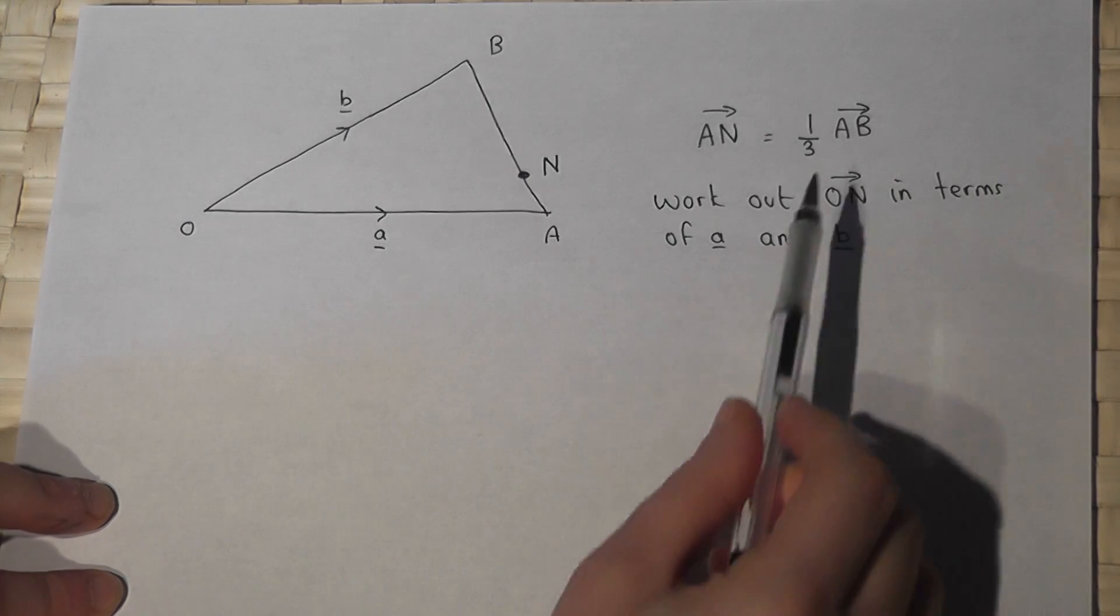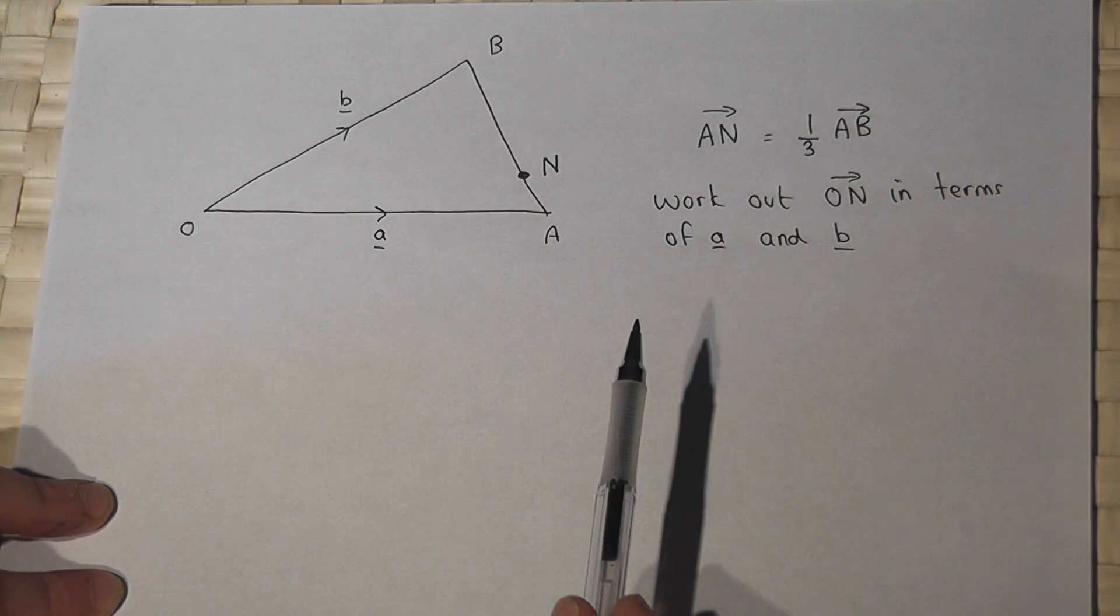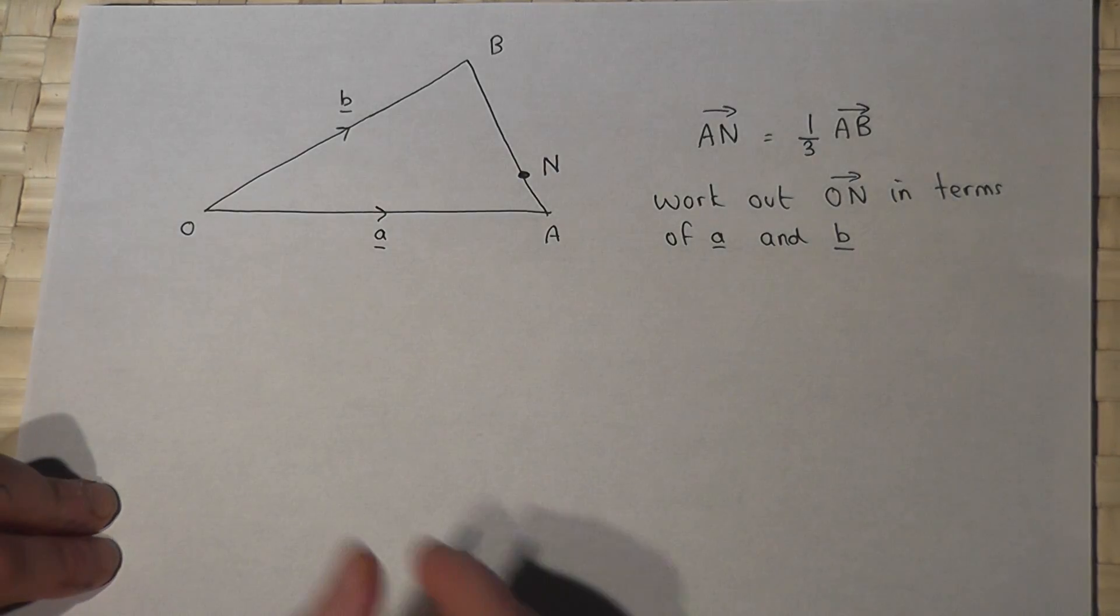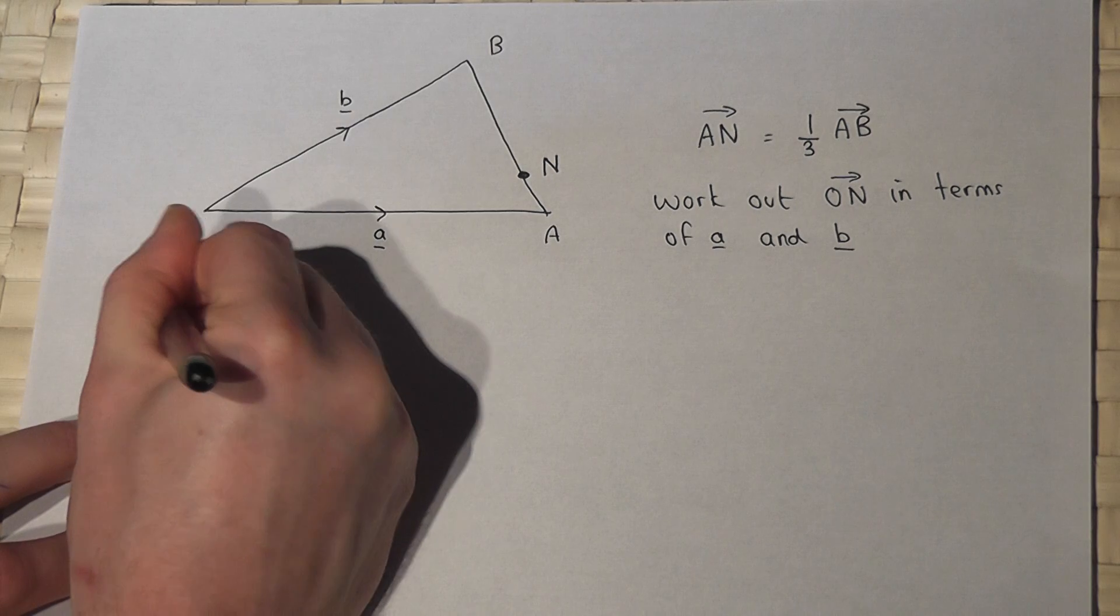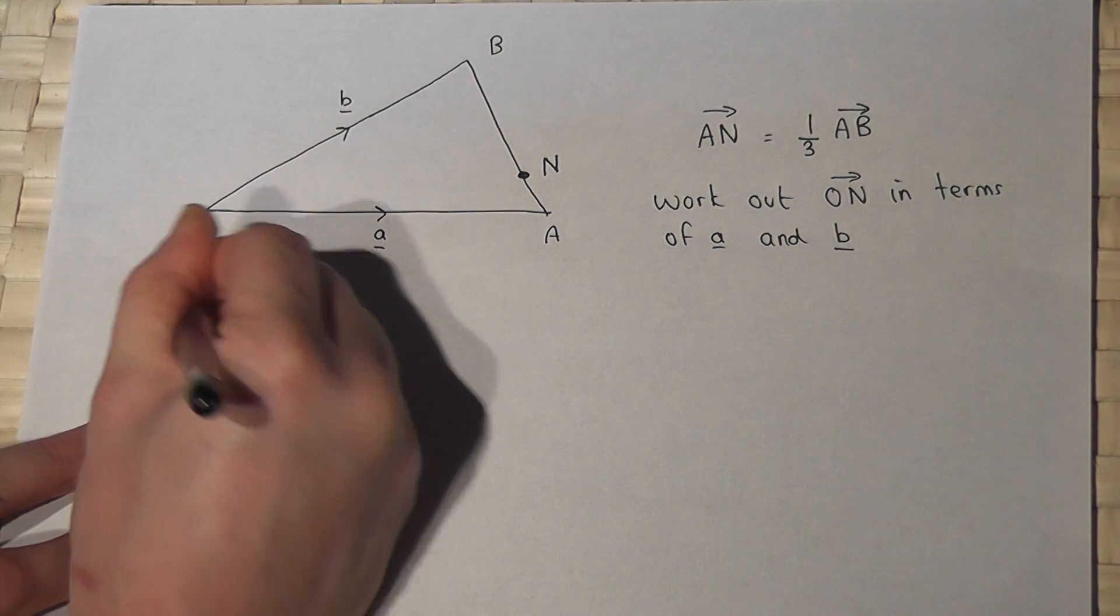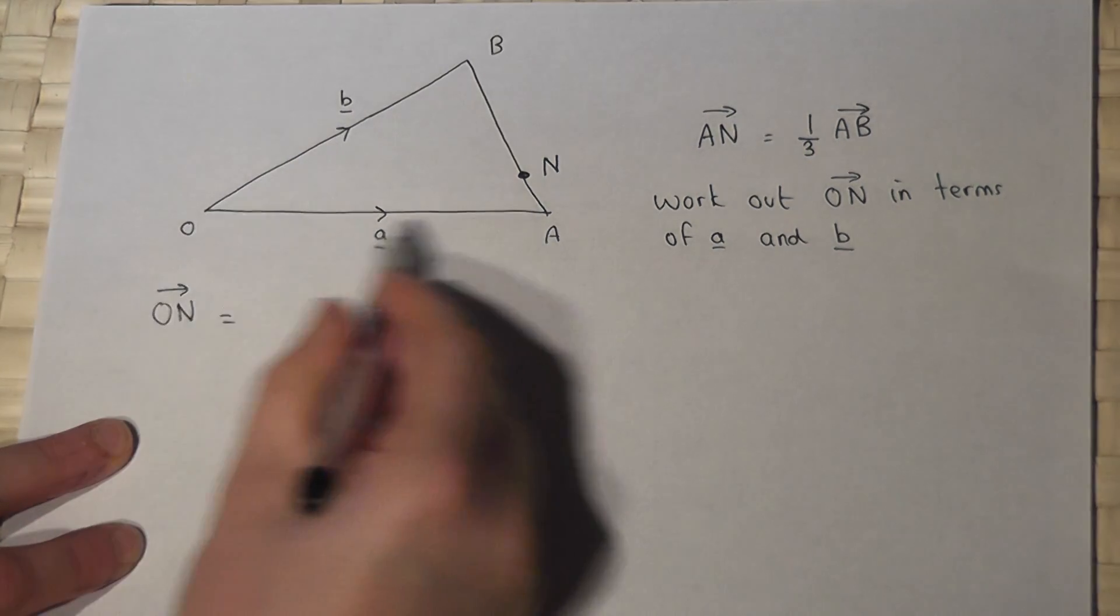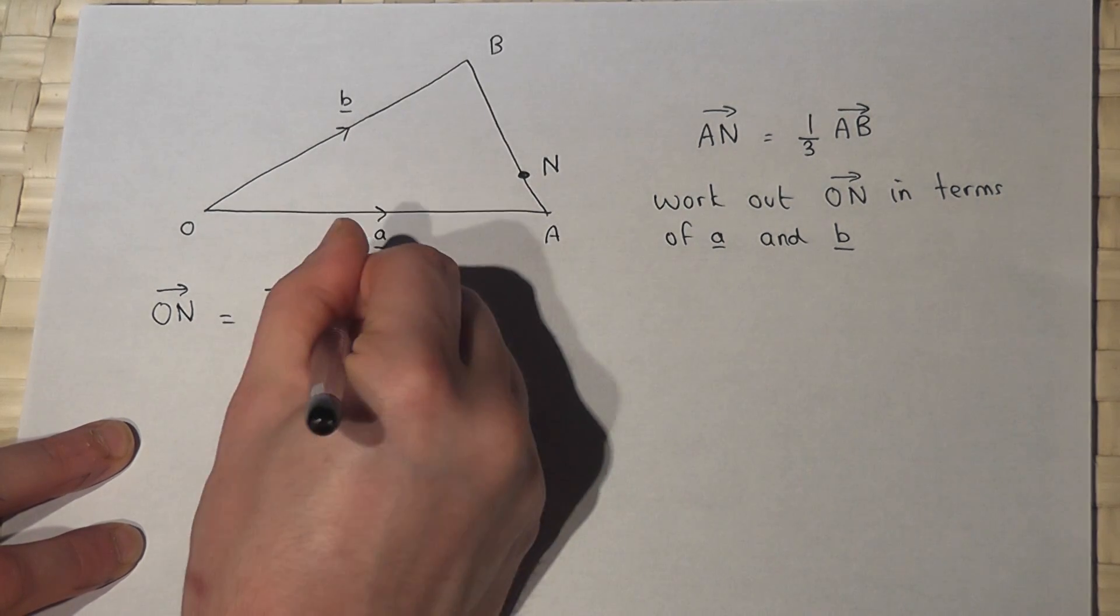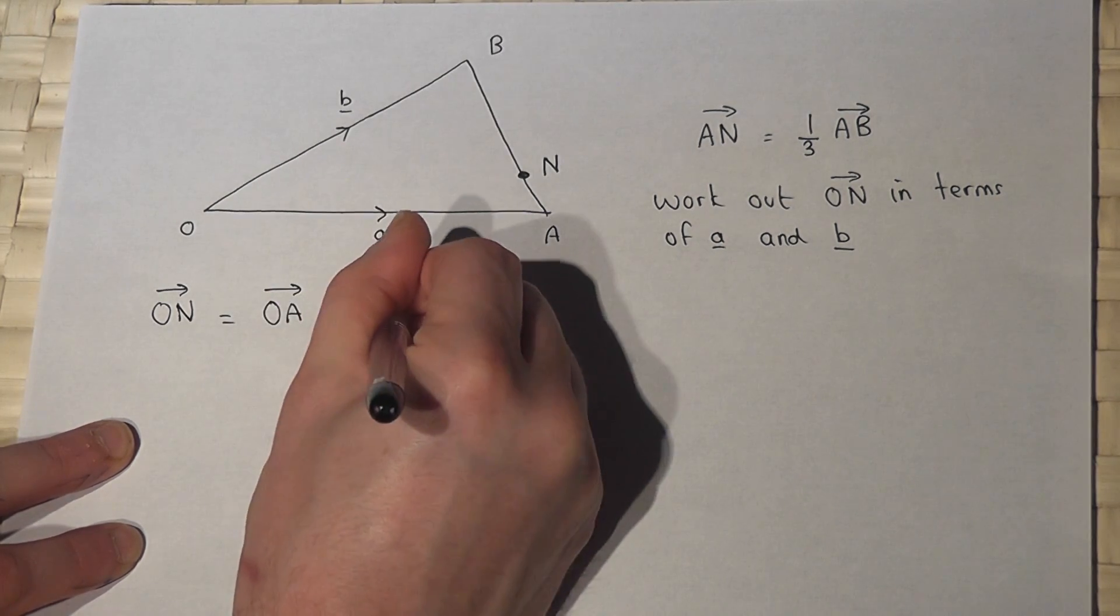I want to work out how to get from O to N involving just A and B. To get from O to N, probably the best route is to go from O to A first, and then to go from A to N.